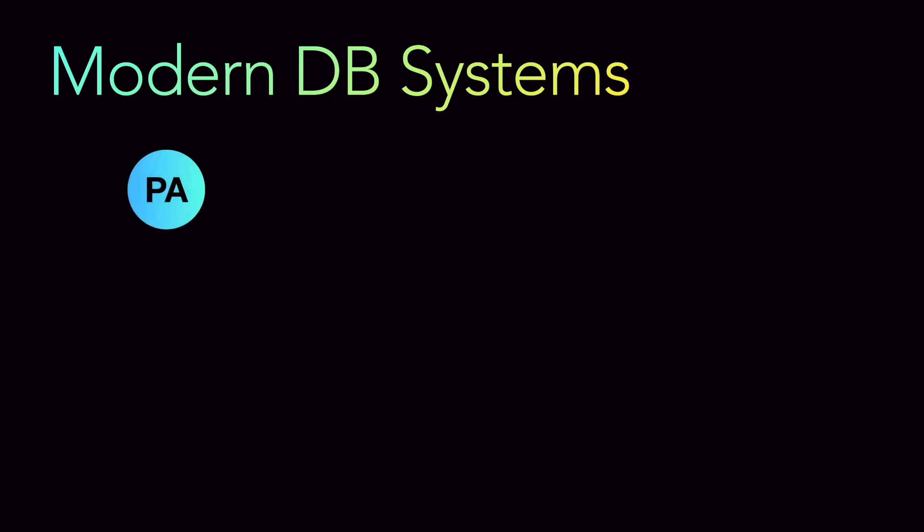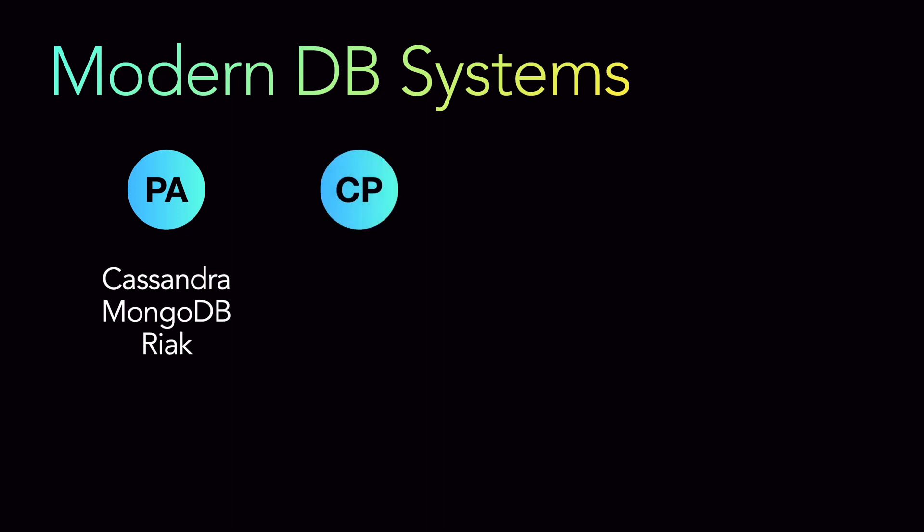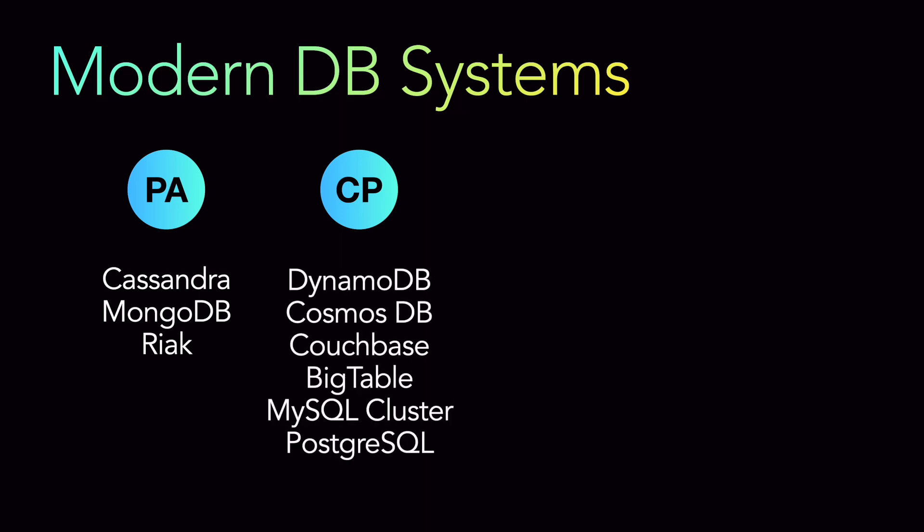Now let's take a look at some modern database systems and what variations of these properties they have. For partition tolerant and available systems — AP systems — we have Cassandra, MongoDB, and Redis. For consistency and partition tolerant systems — CP systems — we have DynamoDB, CosmosDB, Couchbase, Bigtable, SQL clusters, and PostgreSQL. Basically all relational databases which try to achieve strong consistency and ACID properties go via the CP model.